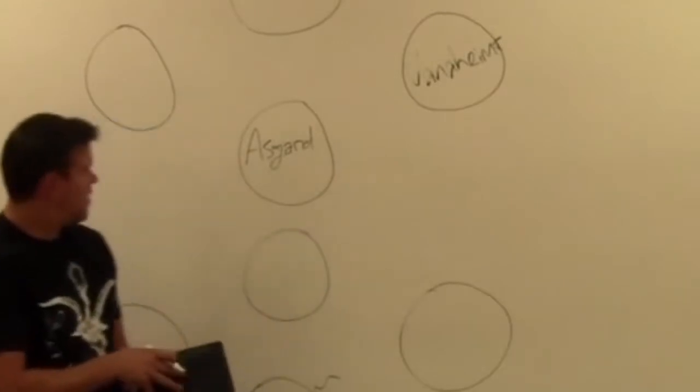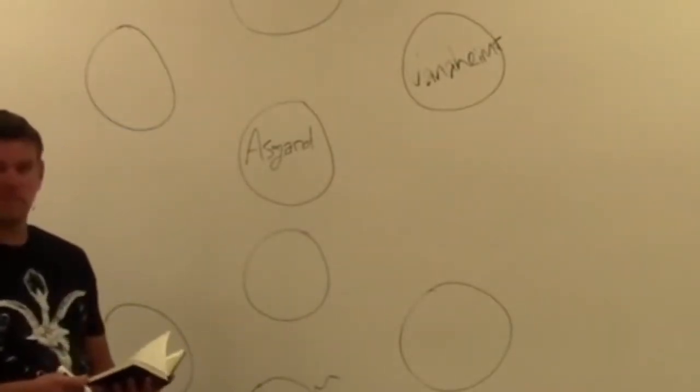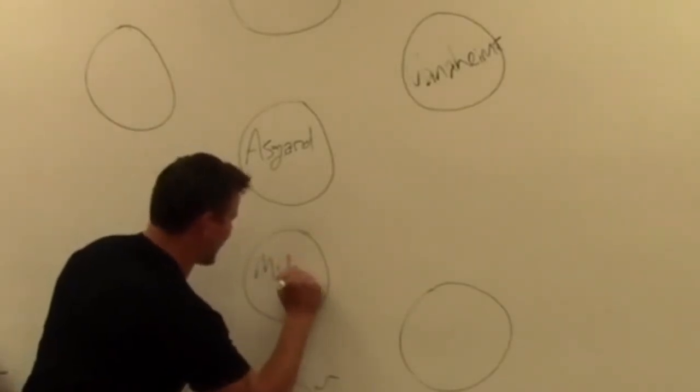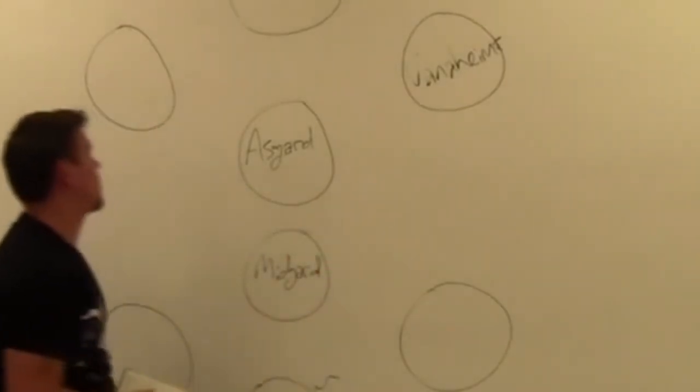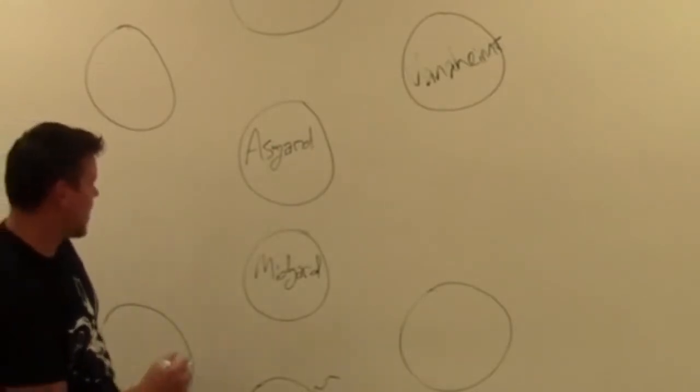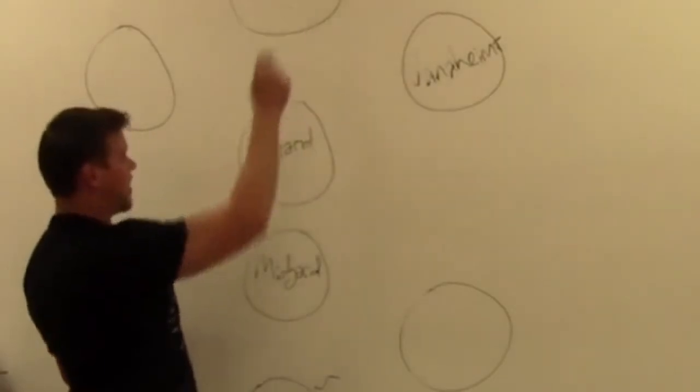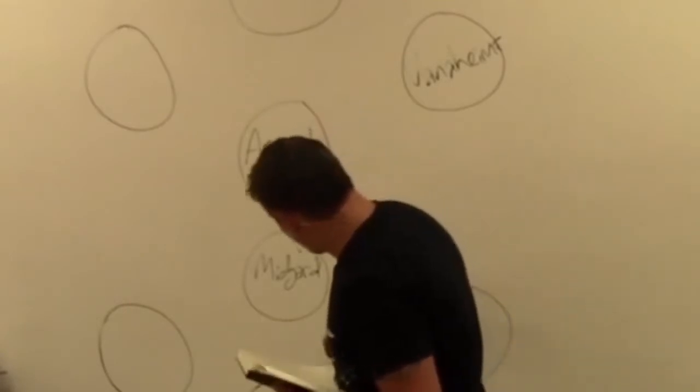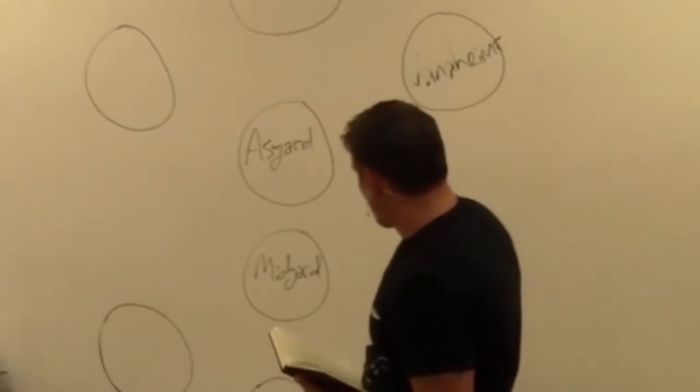And the world of man is Midgard. In the original spelling you'd have an R at the end of those, and a lot of words have silent Rs. The word Heim is home. The word guard sets up almost like a fortress. Midgard and Asgard are both fortresses.